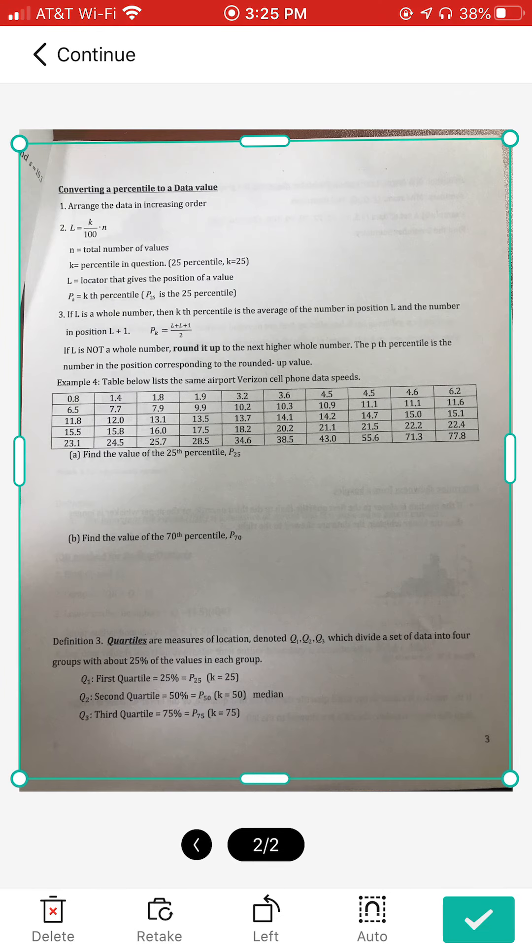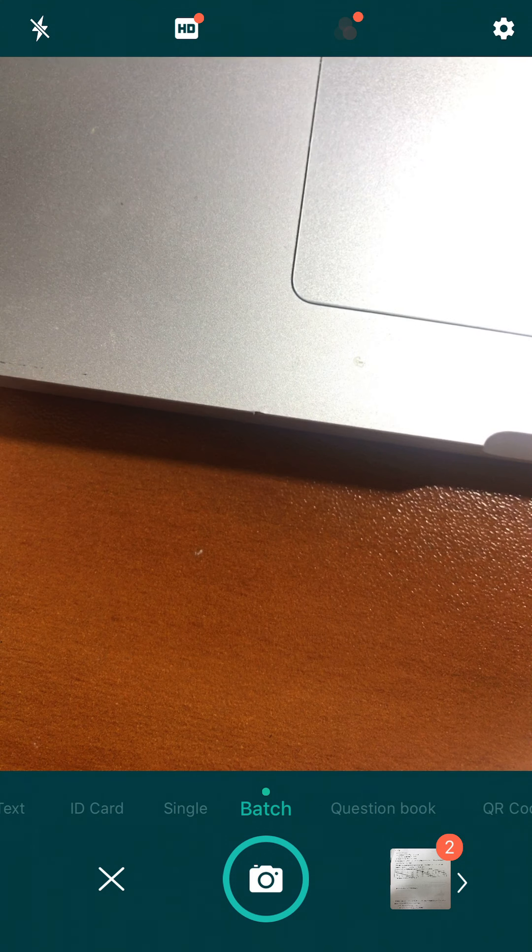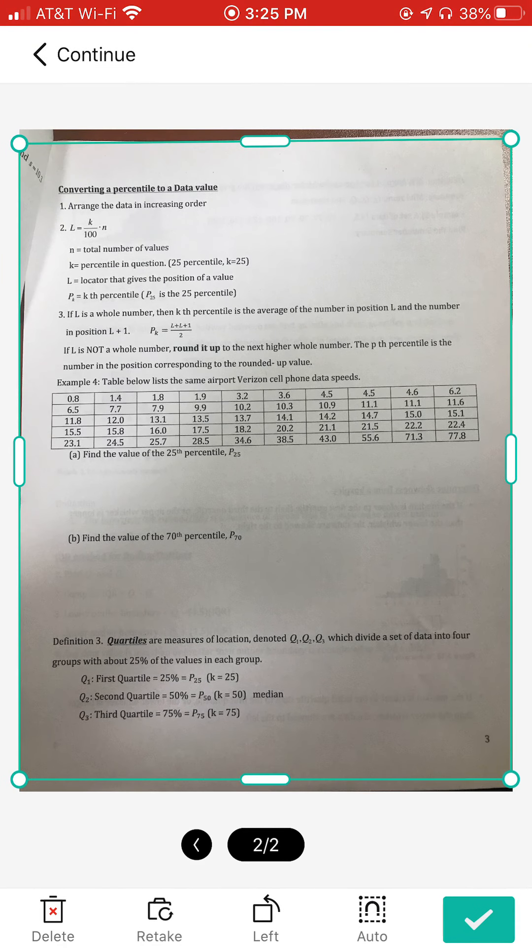If you have a page three, then go back to continue and use the camera button to take page three. If not, click on the two-page file and then select tick.